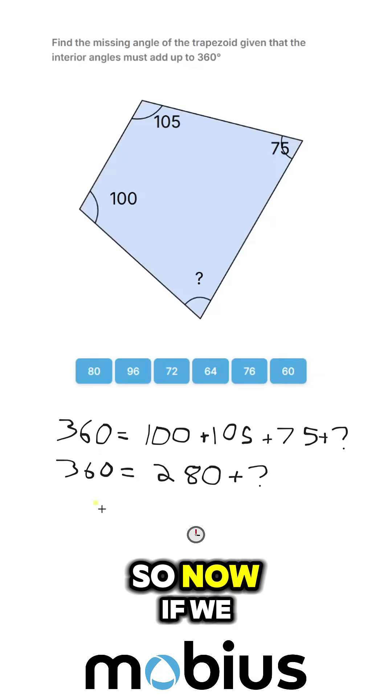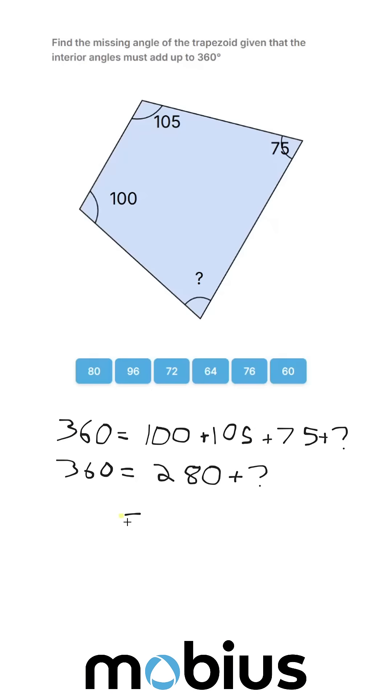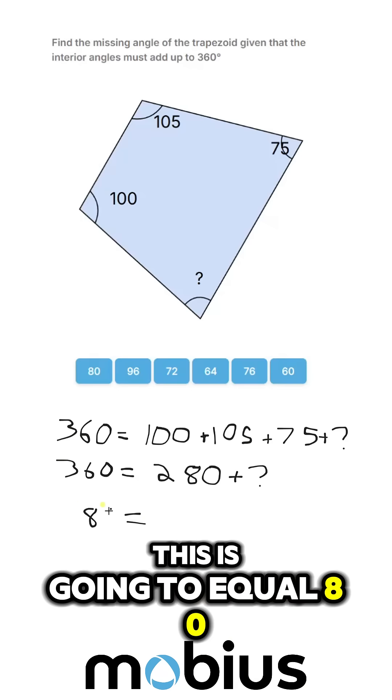So, now, if we subtract 280 from both sides, this is going to equal 80.